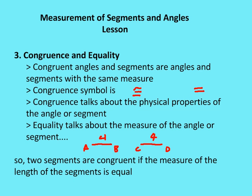Last part: congruence and equality. Congruent angles and segments are angles and segments with the same measure. The congruent symbol is an equal sign with a little squiggly line on top. Congruence talks about the physical properties of the angle or segment — for example, saying one corner of a house is congruent to another corner refers to physical properties. Equality talks about the measure of the angle or segment.